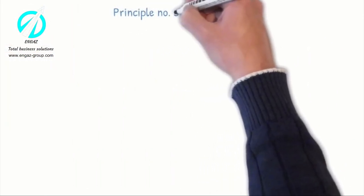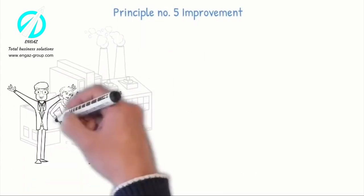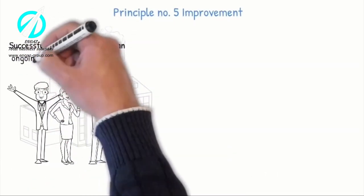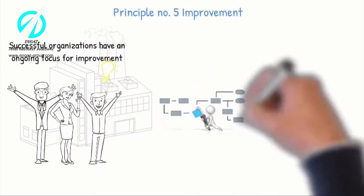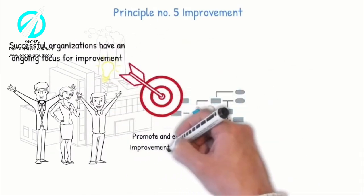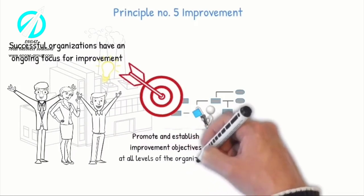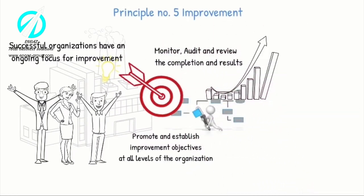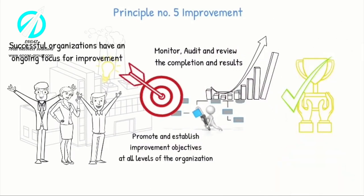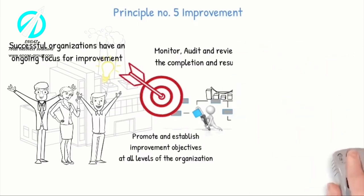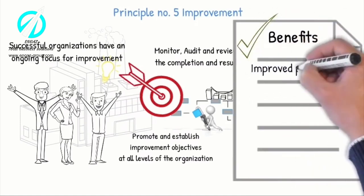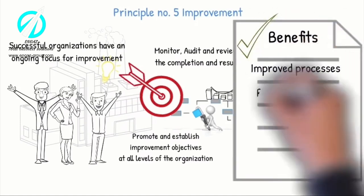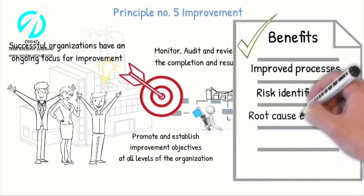Principle number five: Improvement. Successful organizations have an ongoing focus on improvement. They promote and establish improvement objectives at all levels of the organization by systematically monitoring, auditing and reviewing the completion and results of the processes, and recognize and acknowledge improvement. The continuous improvement culture has the following benefits: improved processes, risk identification, root cause elimination, breakthrough management and enhanced innovation.